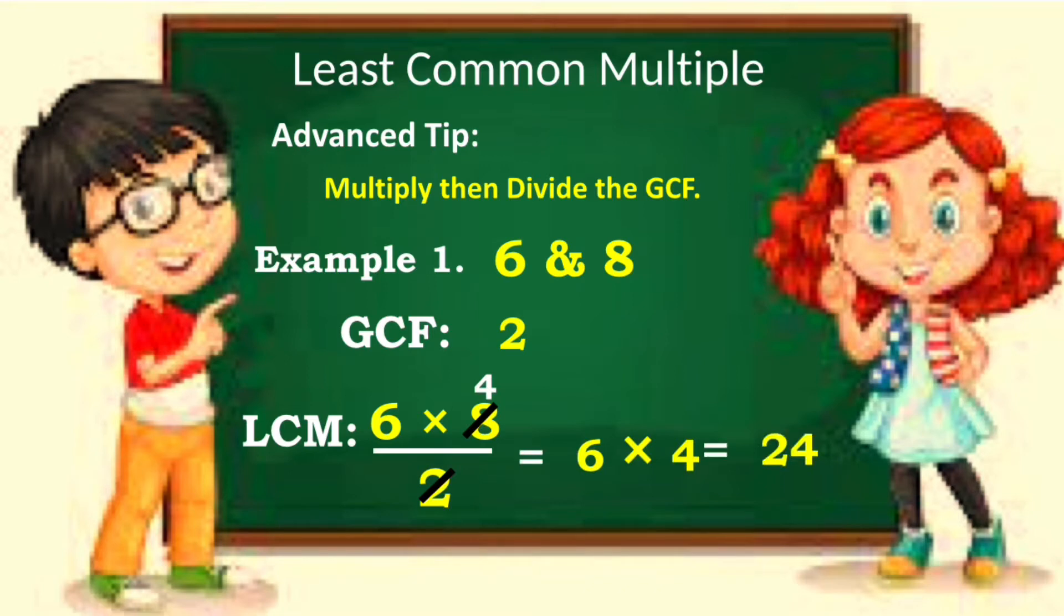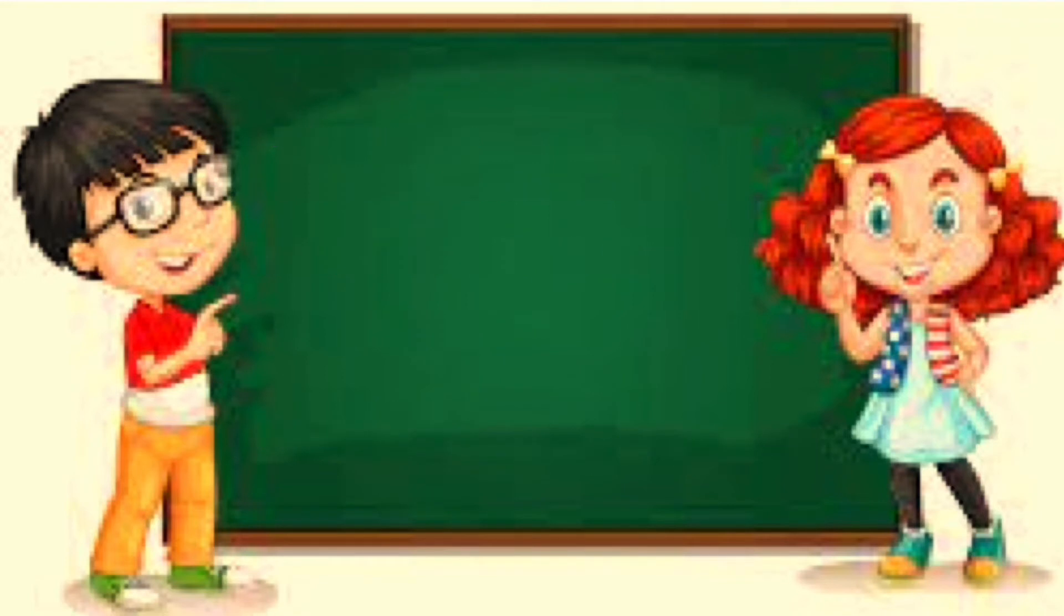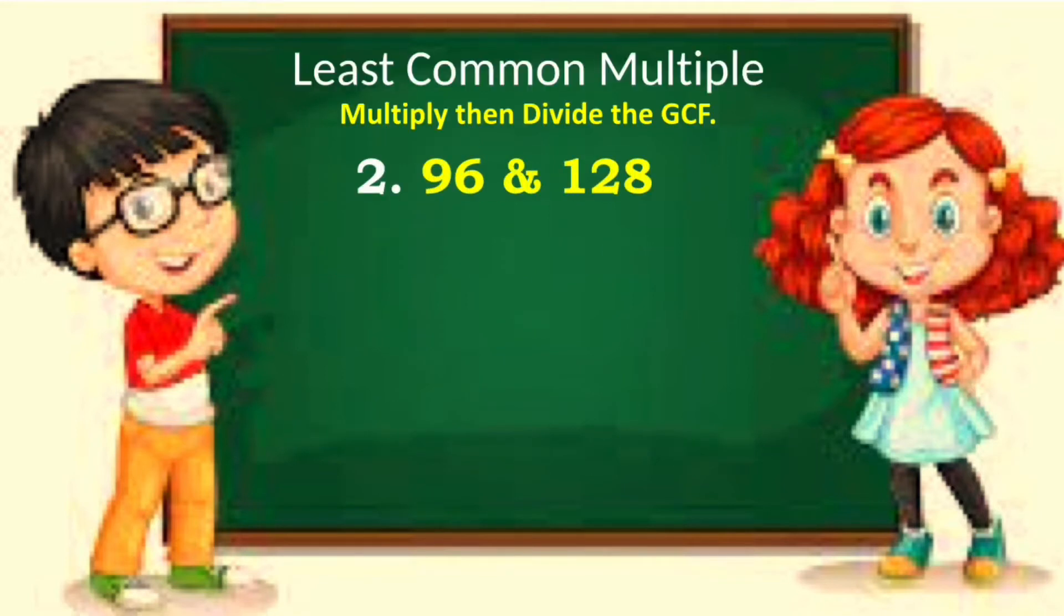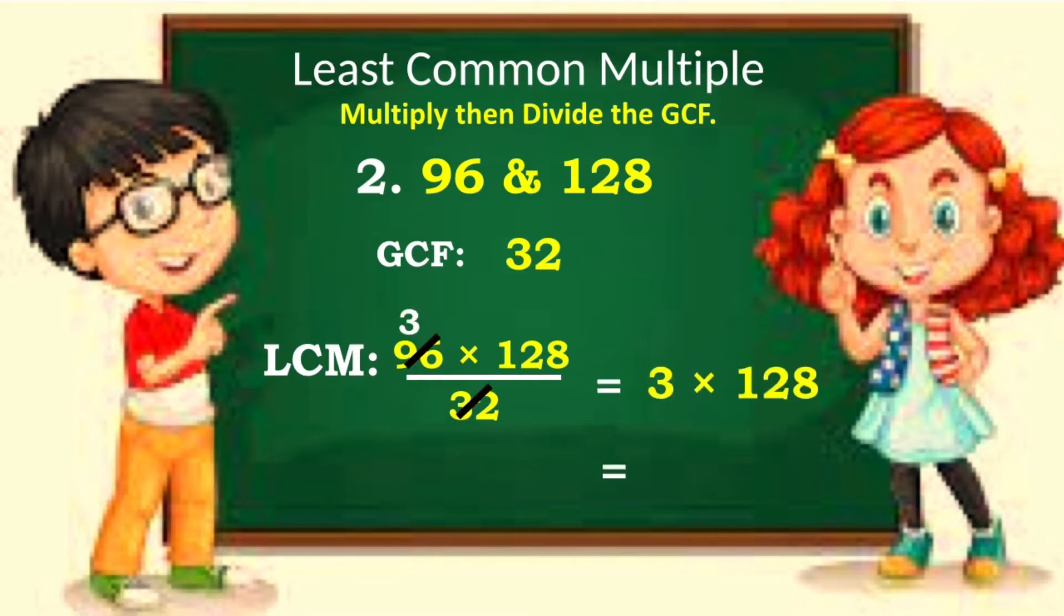Example number 2, find the LCM of 96 and 128. After subtracting 128 and 96, we get the GCF of 32. Now solve the LCM. Multiply the numbers, 96 times 128 divided by the GCF of 32. So 96 divided by 32 is 3. So 3 times 128, the LCM is 384.